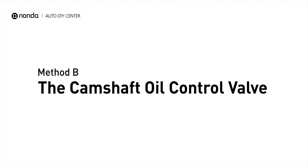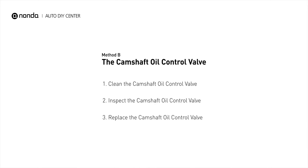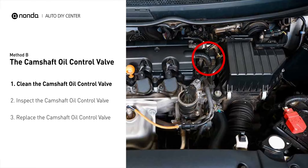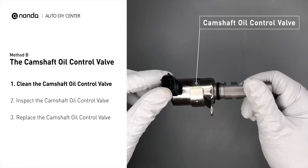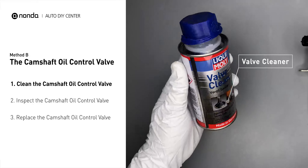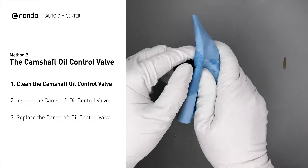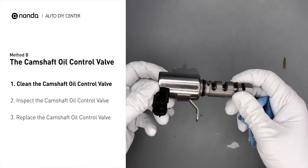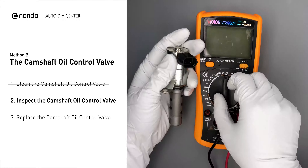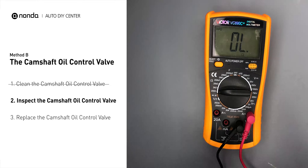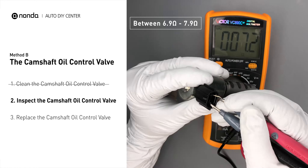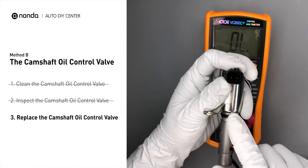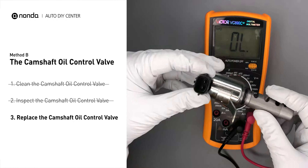Method B: the camshaft oil control valve. The camshaft oil control valves are usually located in cars that have engines with variable valve timing systems. First, carefully remove the camshaft oil control valve from the engine. Use a valve cleaner to clean the camshaft oil control valve. Then use a multimeter to test the camshaft oil control valve. In ambient temperature of 68 degrees Fahrenheit, the valve resistance should be between 6.9 ohms and 7.9 ohms. If you do not get a reading, this indicates that the camshaft oil control valve is faulty and needs to be replaced.